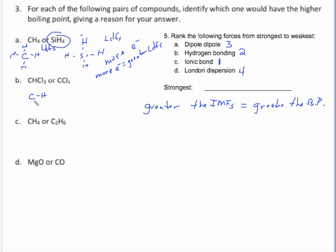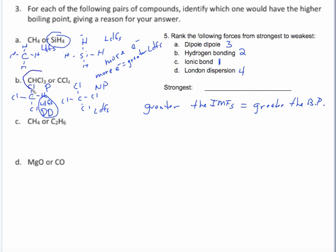Letter B — you draw these out and what you would see is that CHCl3 is polar and CCl4 is nonpolar. Both have London dispersion forces, which are the weakest forces. But because CHCl3 also has dipole-dipole forces, the combination of London dispersion forces and dipole-dipole forces is greater than just the London dispersion forces in CCl4. So CHCl3 is going to have a higher boiling point than CCl4.